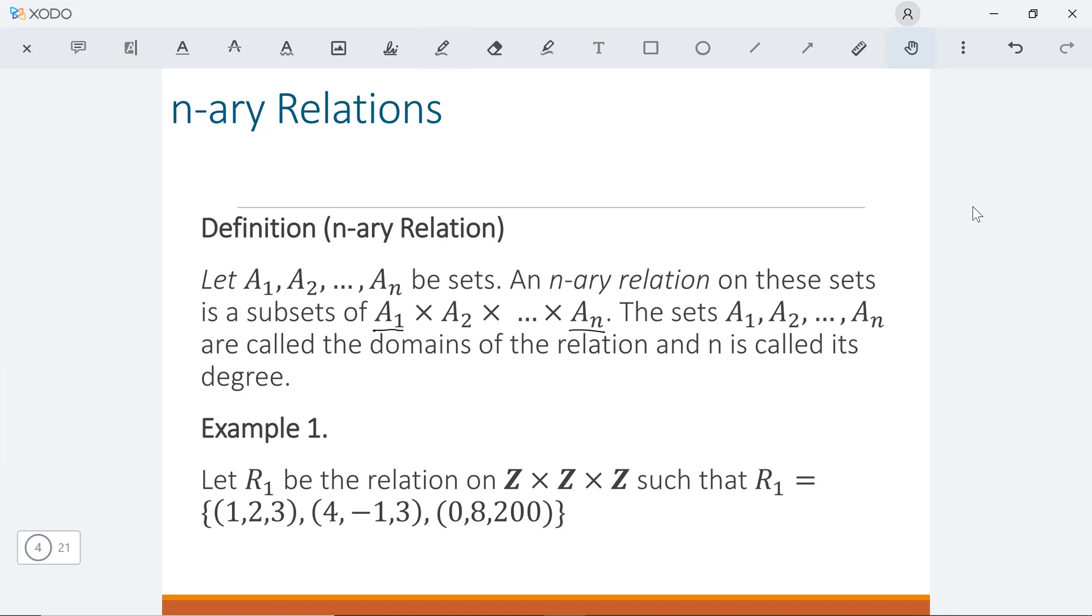Because we have n numbers of sets, this n-ary relation actually is a subset of the product between A₁, A₂, until Aₙ. Of course, similar to our relation, we call these n sets, A₁ until Aₙ, as the domain of our relation. And n is called the degree of this relation.